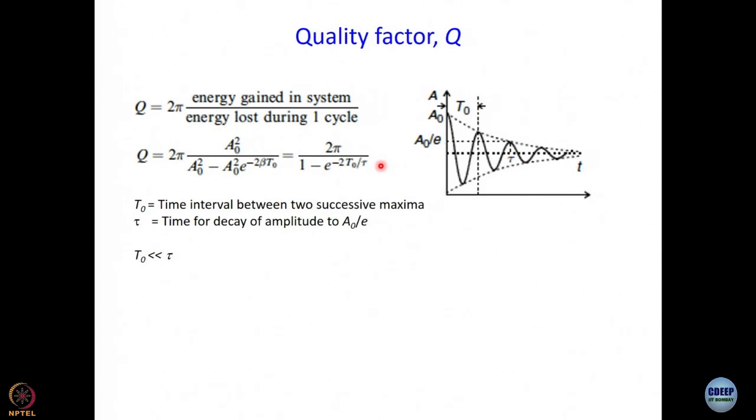Now, we can simplify this expression a little bit precisely because T0 is so much smaller than tau. What will happen if T0 is much smaller than tau? How do I expand e to the power minus 2 T0 by tau? This is a technique that we have used in almost all physical chemistry courses. If you do quantum mechanics, statistical mechanics, whatever, you always use this kind of an approximation.